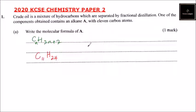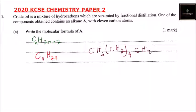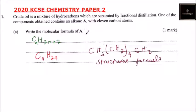Alternatively, you can write the structural formula: CH3, then CH2 repeated 9 times, then CH3. This is the structural formula for alkane A obtained from the crude oil.